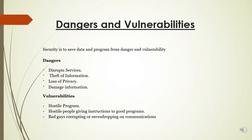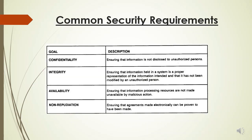Security is about saving data and programs from danger and vulnerability. Some dangers include: disrupting services, theft of information, loss of privacy, and distortion of information. Some vulnerabilities include hostile programs and hostile people giving instructions to good programs, or bad actors corrupting and eavesdropping on communications. Common security requirements are: Confidentiality — ensuring information is not disclosed to unauthorized persons; Integrity — ensuring information in a system has not been modified by an unauthorized person; Availability — assuring that information processing resources are not made unavailable by malicious actions; and Non-repudiation — ensuring that agreements made electronically can be proven to have been made.